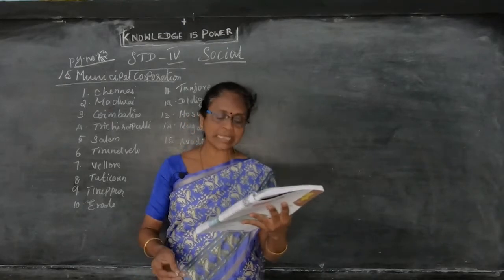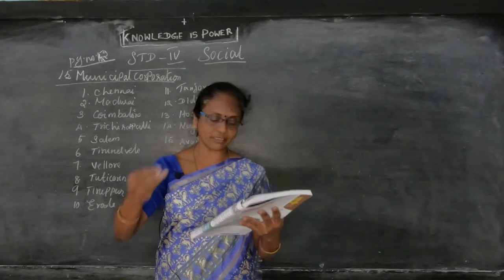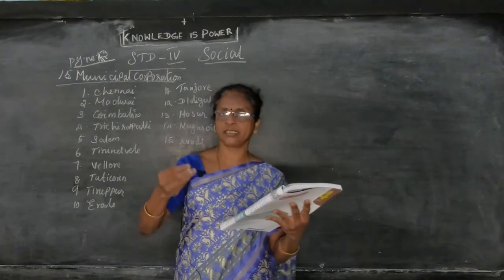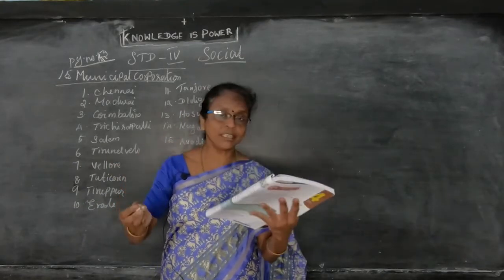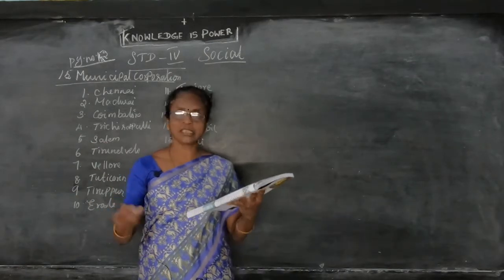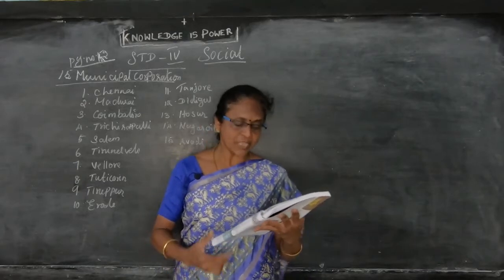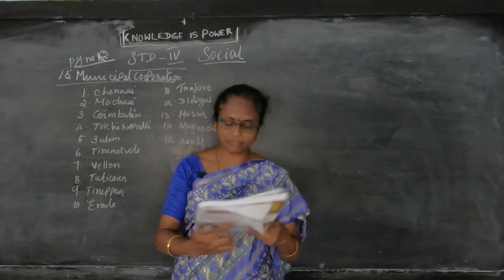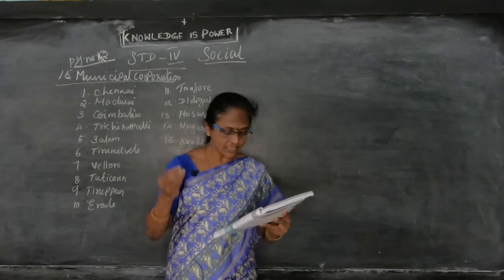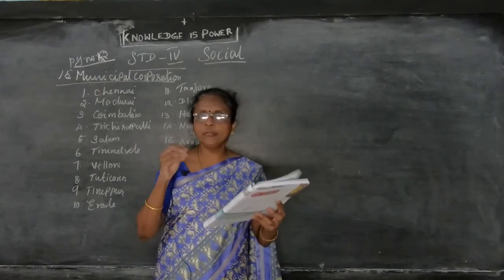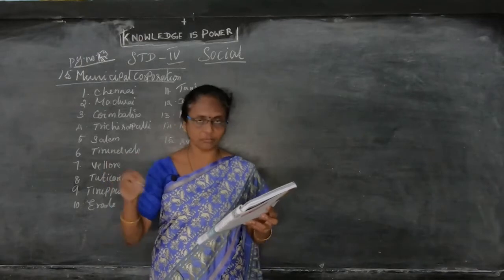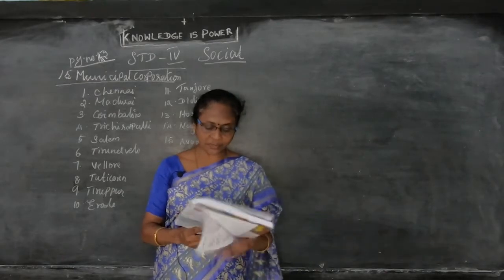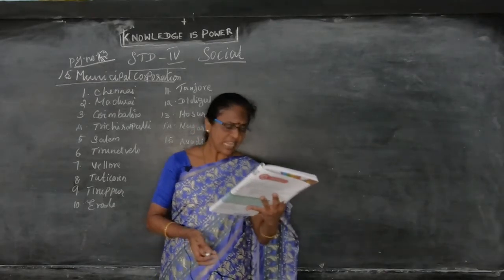What do you mean by tax? Tax is the part of the income or profits paid by the people to the government. One part of the income goes to the government. Through these taxes, corporations and municipalities provide facilities to the people. Tenure means the period of time - like five years or four years. Revenue means fees earned for the service provided. Population means the total people who live in that area.